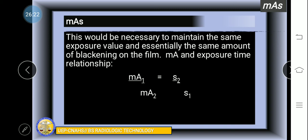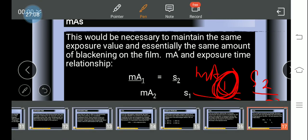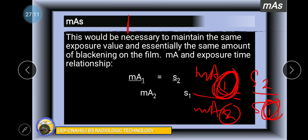The reciprocity law is MA1 over MA2 equals exposure time 2 over exposure time 1. If one is on top, the other is on the bottom. This is called the reciprocity law.